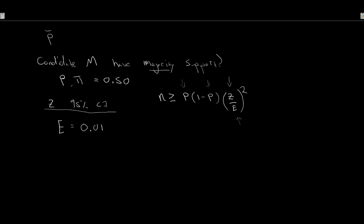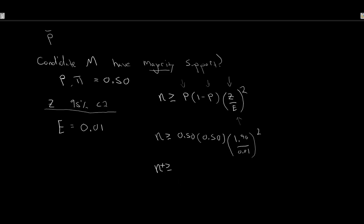Working this out: majority support means P = 0.50, so 1 − P = 0.50 as well. Z for 95% confidence is 1.96, and the maximum allowable error is 1%, or 0.01. So we compute (1.96 / 0.01)² × 0.5 × 0.5, which gives N ≥ 9,604.